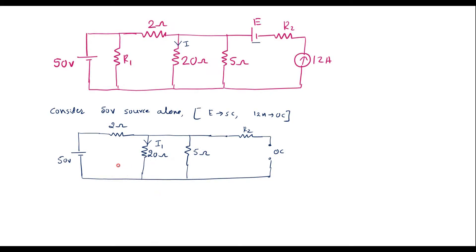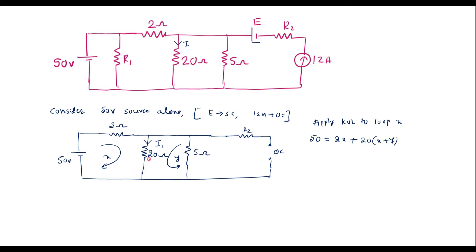Let me solve this using KVL. I will assume the current through the branch loop is X, and the current through the other loop is Y. Applying KVL to loop X: 50 = 2X + 20(X + Y), since both X and Y flow through the 20 ohm resistor. Simplifying: 50 = 22X + 20Y. We will call this equation 1.